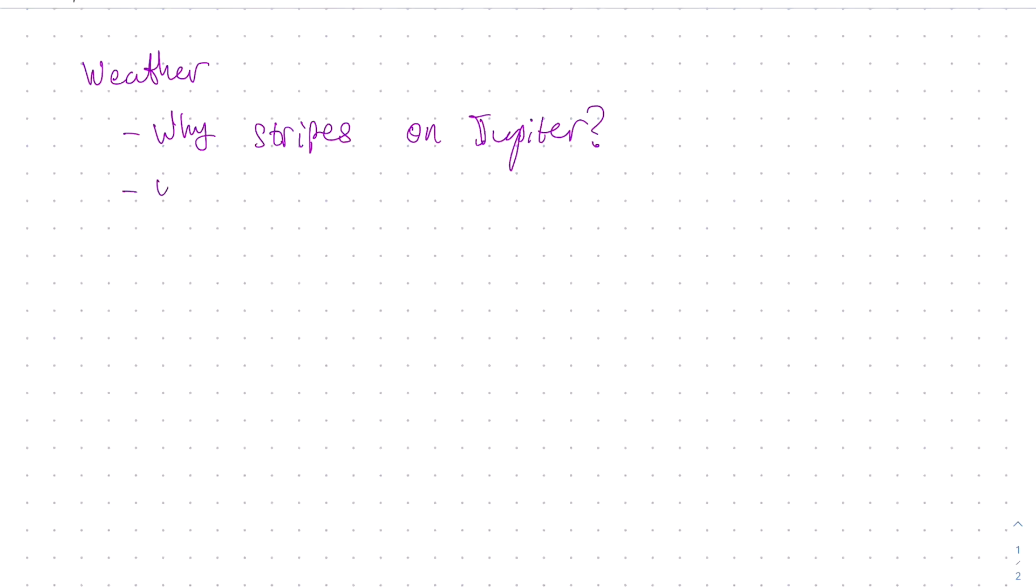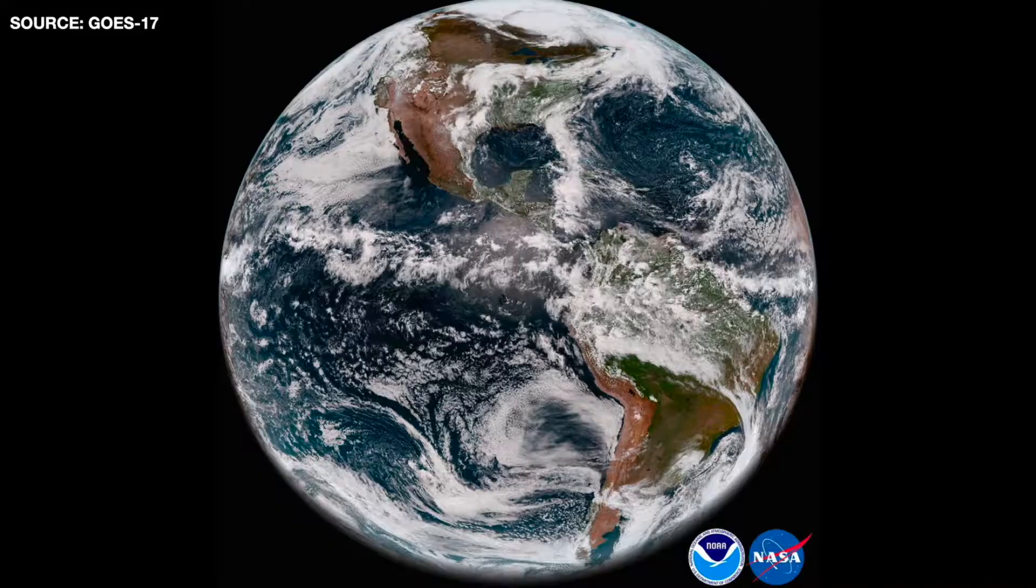Now, the weather on Jupiter is an extreme. But the same reason why there is weather on Jupiter, there is also weather on Earth. We want to understand that question as well. Here is a picture of Earth weather from space, taken by GOES, Geostationary Operational Environmental Satellite 17, which is jointly operated by NOAA, the National Oceanic and Atmospheric Administration, and NASA.